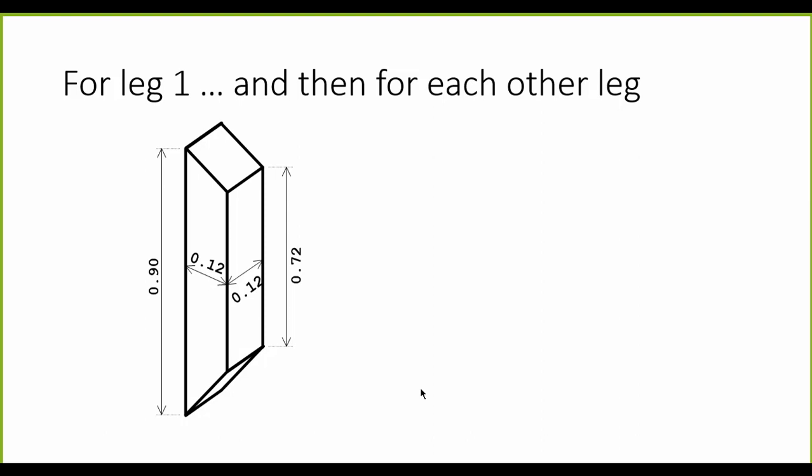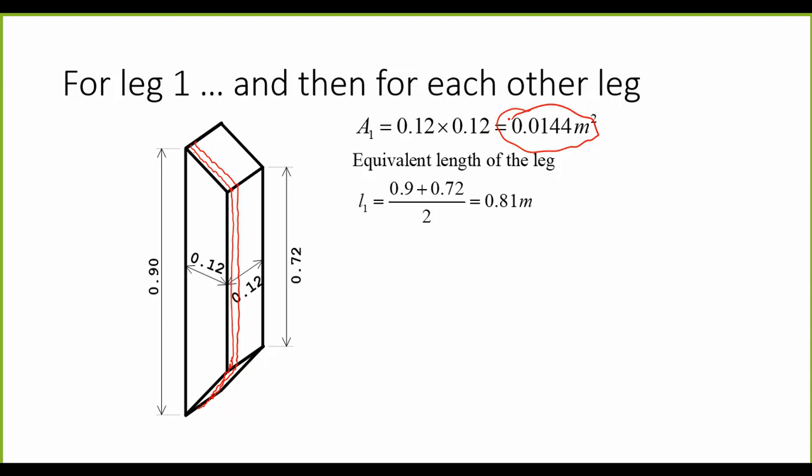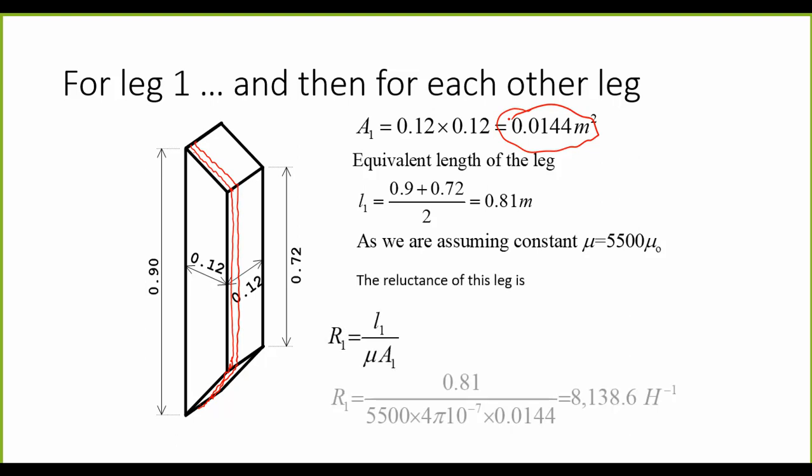What was the reluctance? L divided by mu A. Let's compute the cross section area of the flux, which is 0.12 by 0.12 square meters, and the equivalent length of that one, which is the average between 72 centimeters and 90 centimeters. With that and the magnetic permeability, which is 5,500 times the permeability of air in this exercise, we compute the reluctance: 8,139 henrys inverse for this one.